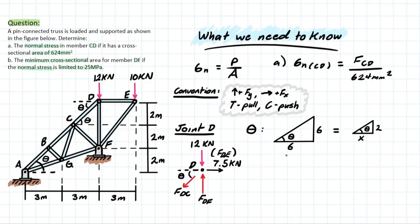Now, relating these together, we know that 6 over 6 is going to be equivalent to X over 2, therefore X will equal 2 meters. And then we can use that information to solve for the angle theta, which will be the tan inverse of 2 over 2, which will simply be equal to 45 degrees.